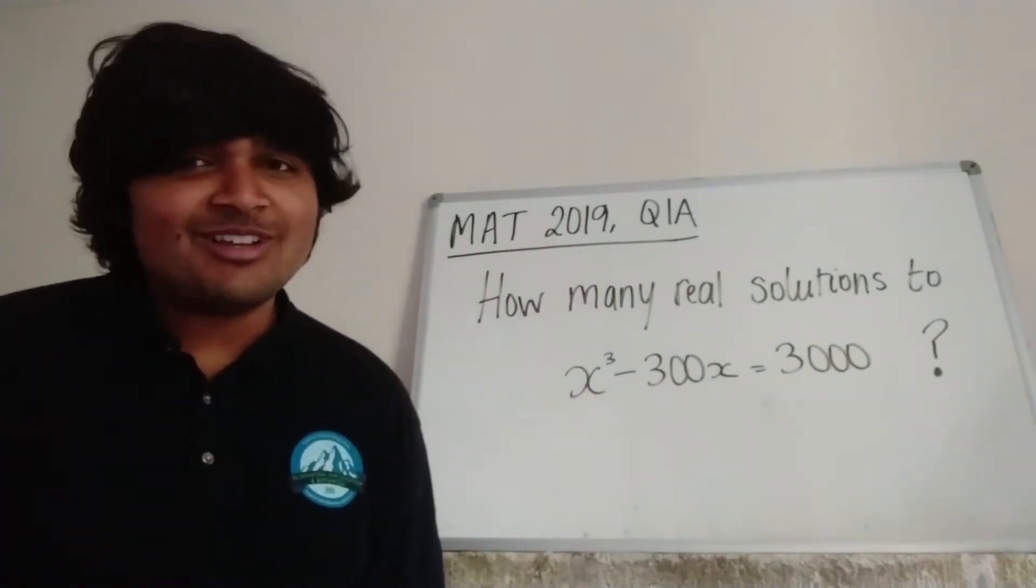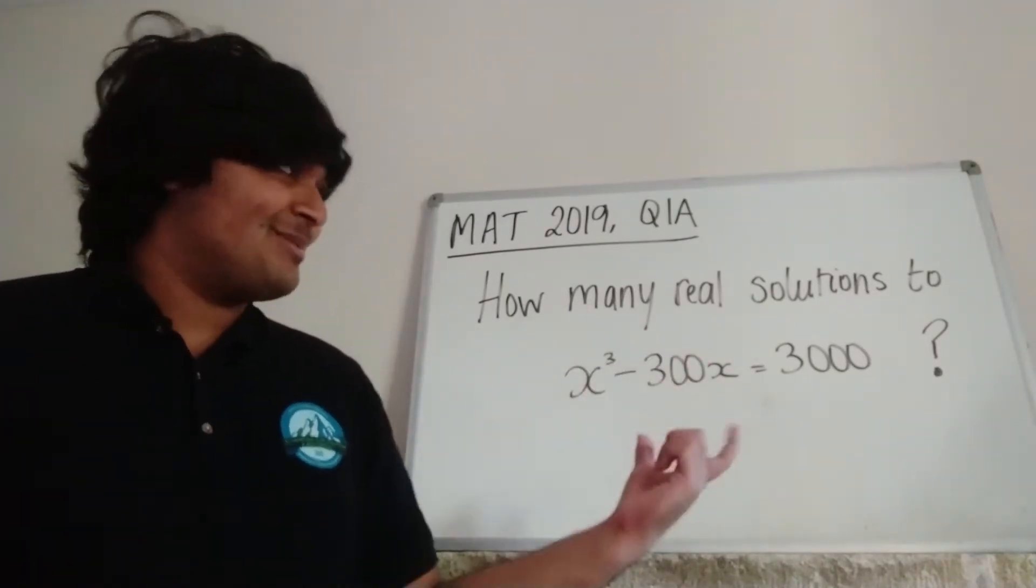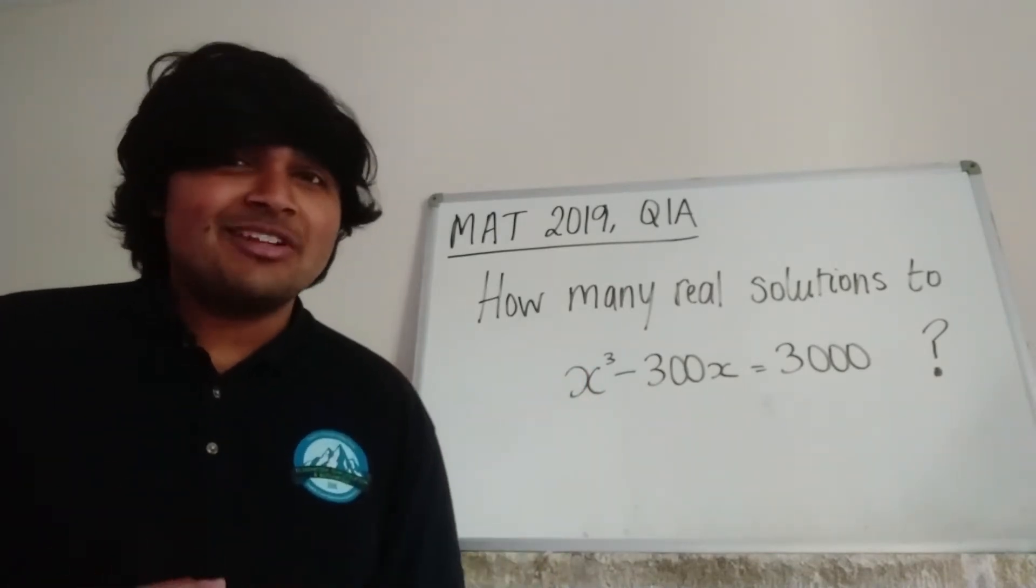We want to know how many real solutions are there to x cubed minus 300x equals 3,000. Okay, so if you want to have a go at this problem, pause the video now and give it a go for yourself. And I'm going to jump straight into a solution.